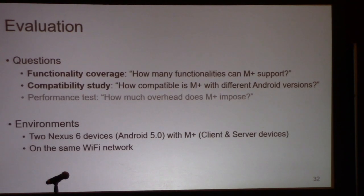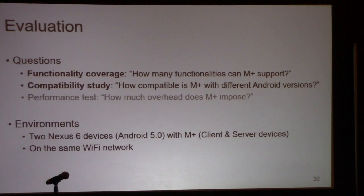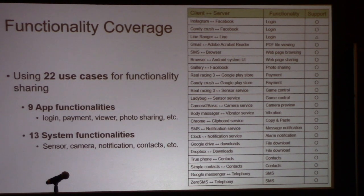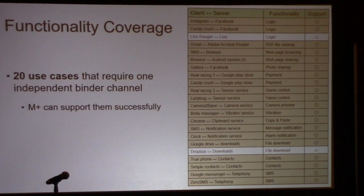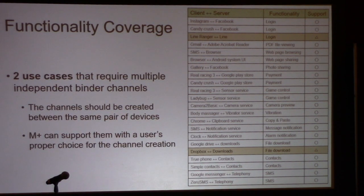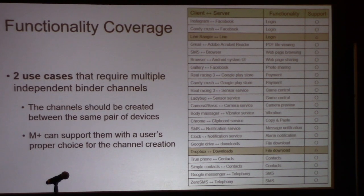We evaluated three aspects, but in this talk we focus on the first and second — functional coverage and compatibility scope. For our environment, we utilize two Android devices connected over the same Wi-Fi network. We evaluated functional coverage using 20 to 100 use cases. Among them, 20 use cases require one independent Binder channel, and Mobile Plus can support them successfully. On the other hand, two use cases require one independent Binder channel to be created between the same pair of devices, and Mobile Plus can support them with a user-friendly interface for channel creation.